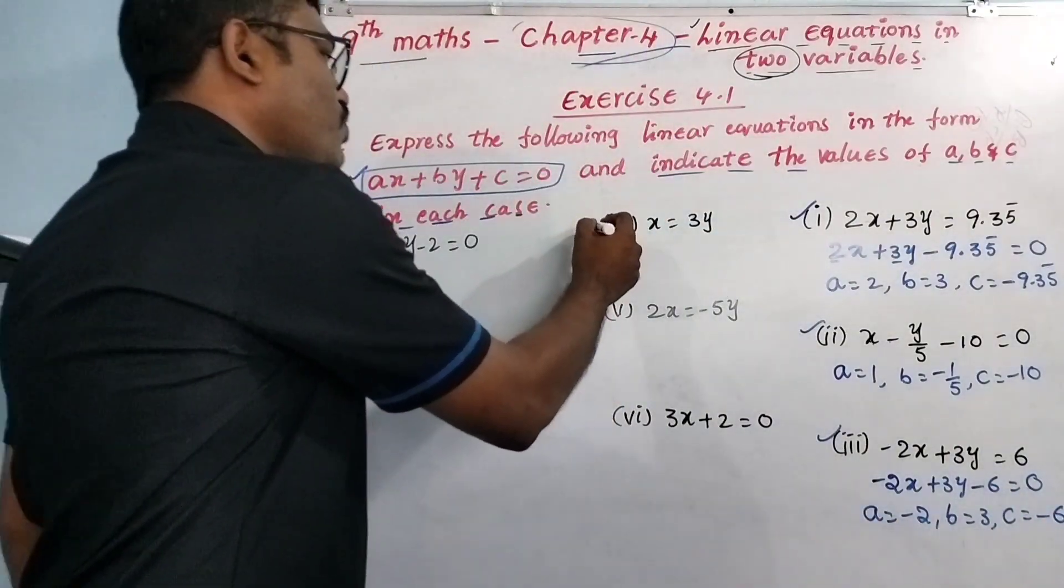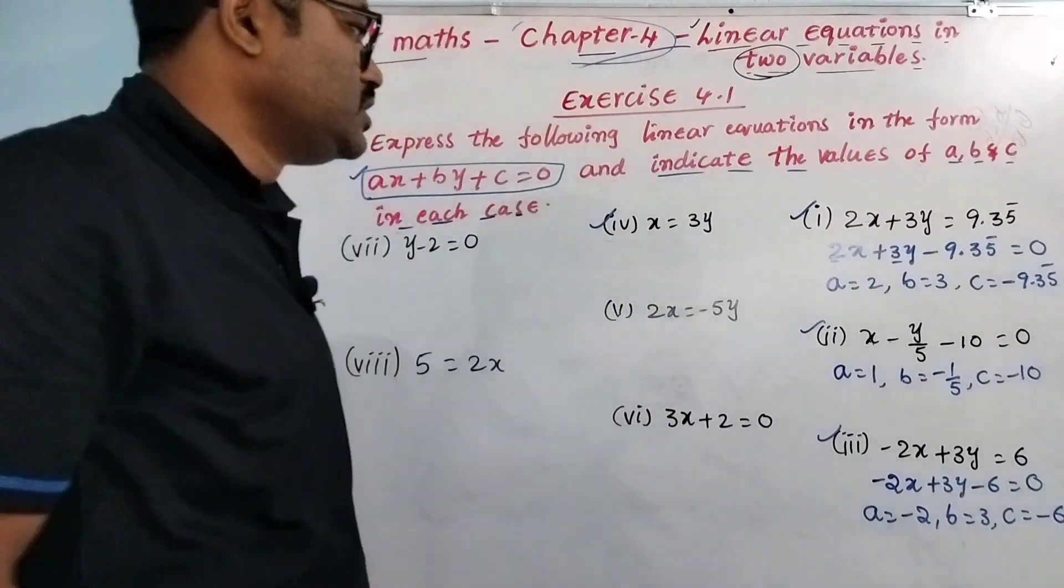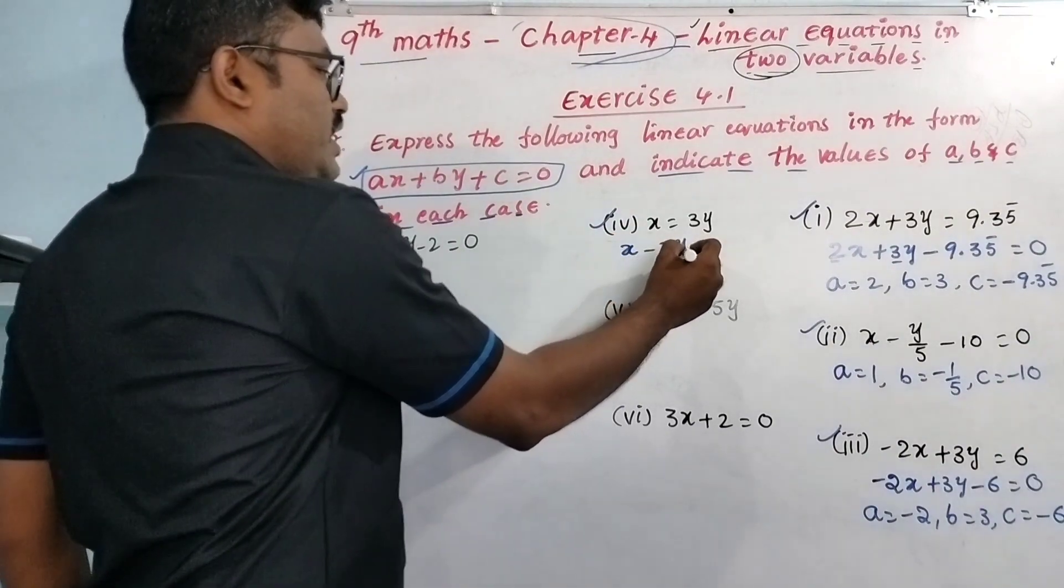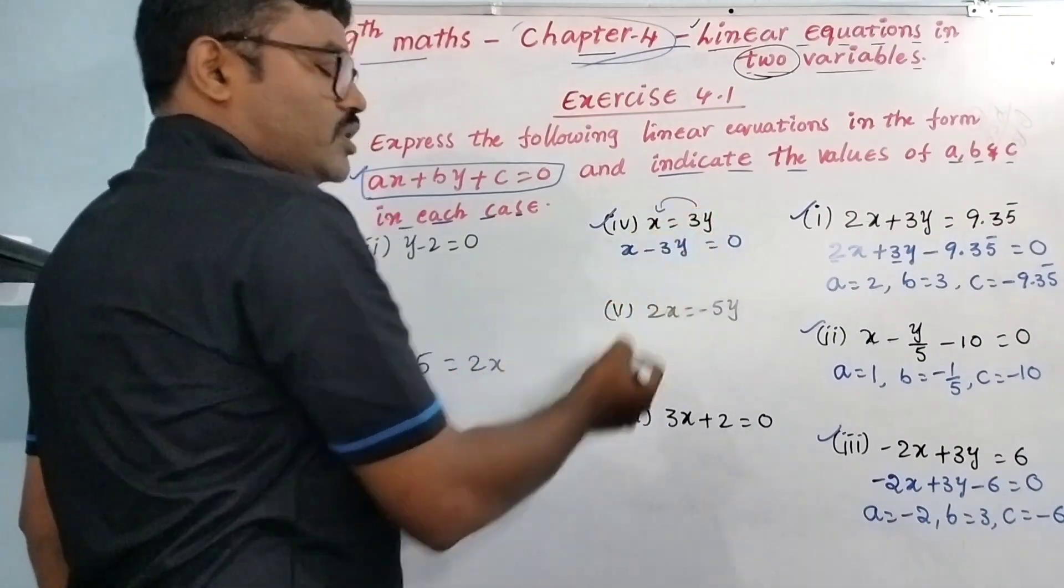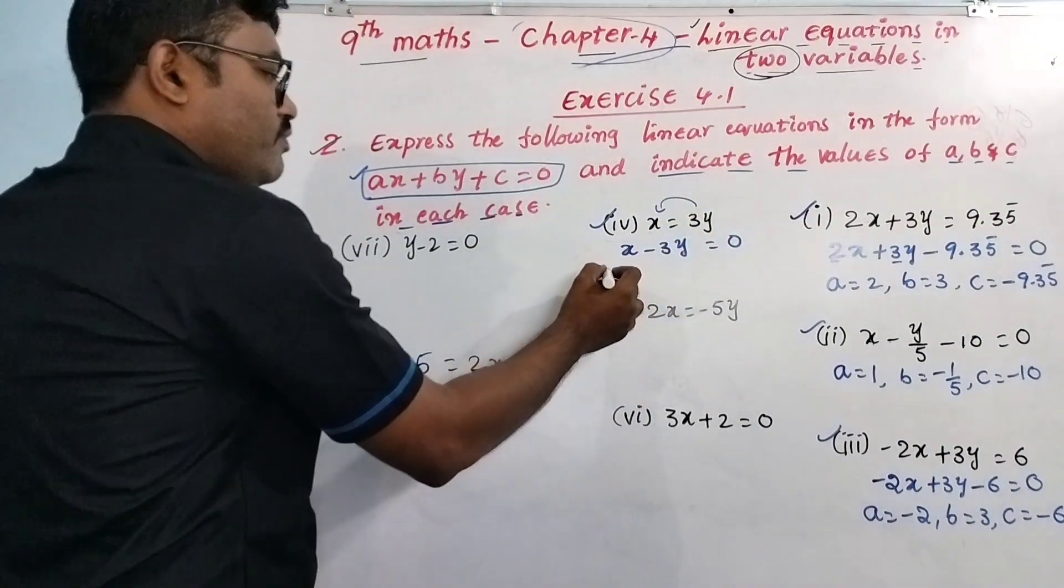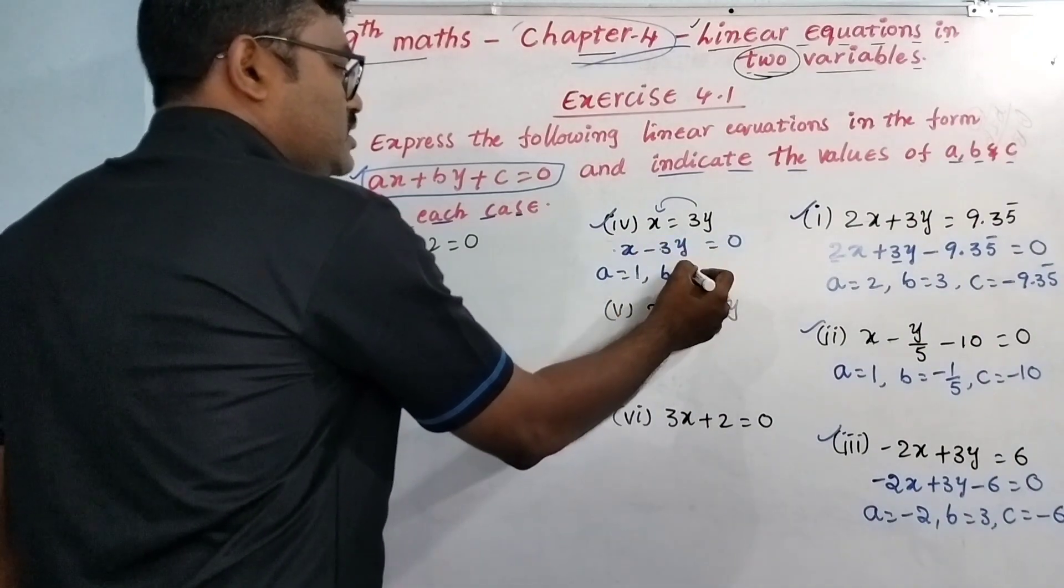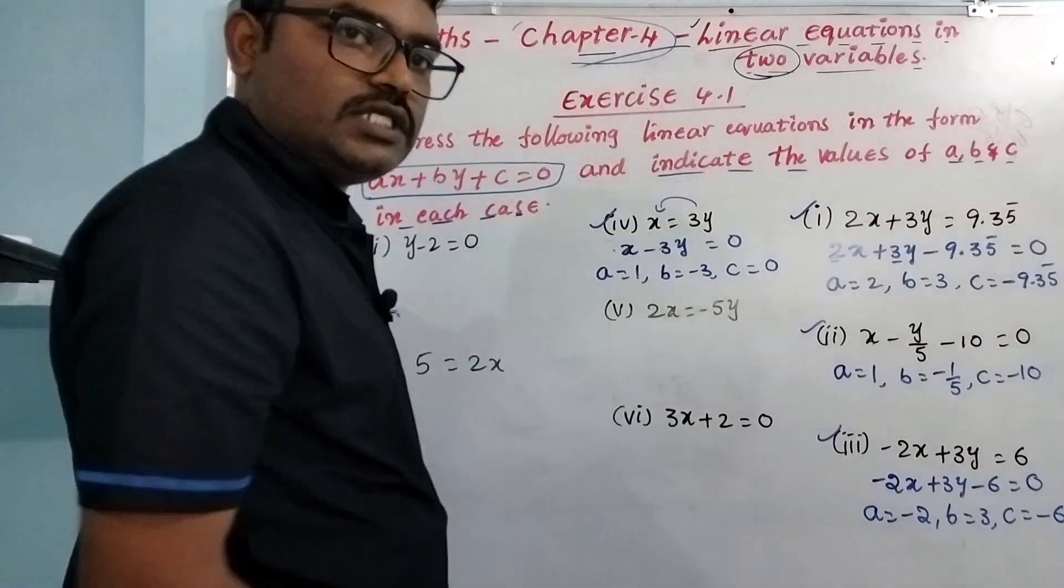Fourth one: x = 3y. If I'm going to express it in standard form, x minus 3y = 0. So what? Here A is 1, the x coefficient is 1, and B is minus 3, the y coefficient. And there is no C, that means C equals 0.